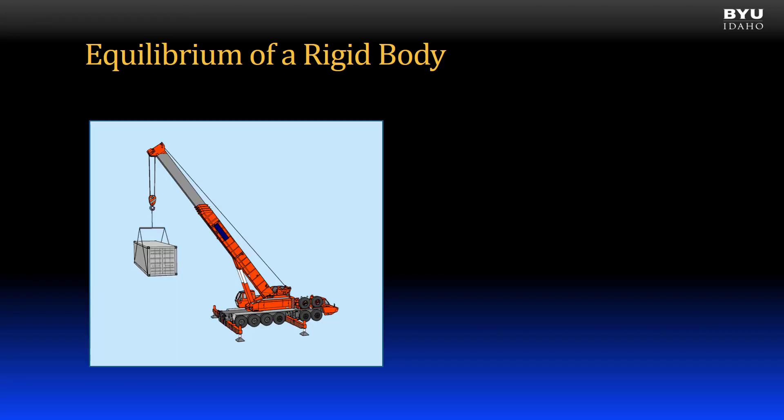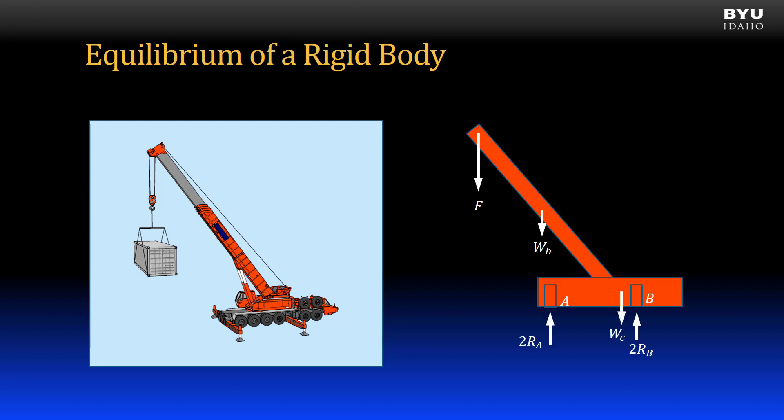Let's go back to the crane example. Even though the crane is a three-dimensional body, given the general symmetry, we can analyze it as a coplanar system. I construct a free-body diagram of the crane body and show all the applied loads. Note that the reaction forces are doubled, since there are outriggers on both sides of the crane. The self-weight of the boom is shown acting through the centroid of the boom, and the crane body self-weight is shown acting through its centroid. Because we will be summing moments, the locations of the loads must also be known.